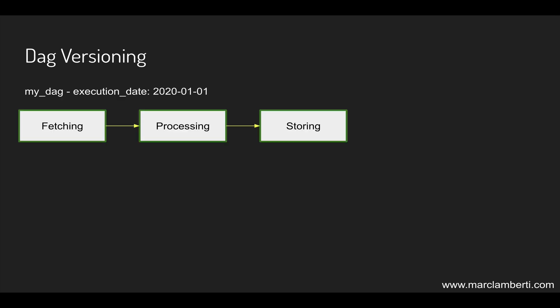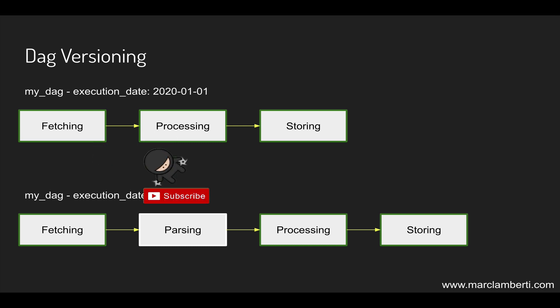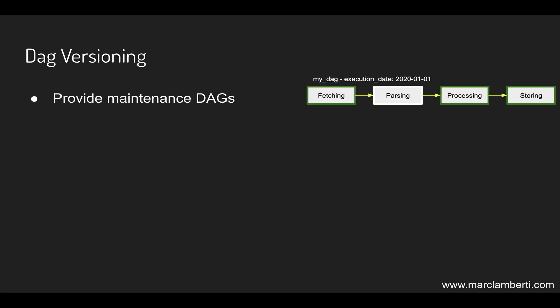The next feature is DAG versioning. Let's say you have a DAG with three tasks that was executed at a given execution date. Now let's say you want to add a new task called 'parsing'. You start new DAG runs and everything works well. The problem is if you go back to an already triggered DAG run, you will see the 'parsing' task without any state — neither succeeded, failed, nor queued. That's an issue as it gives inconsistency in your DAG runs. Currently to solve this you have to version a DAG by specifying the version in the DAG ID, like 'my_pipeline_v1', 'my_pipeline_v2', and so on. DAG versioning will eliminate this tedious task.